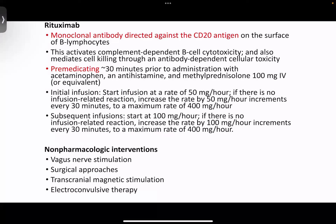In most refractory cases, rituximab is used — a monoclonal antibody directed against CD20 antigens on the surface of B lymphocytes. Before giving rituximab, premedication approximately 30 minutes prior with acetaminophen, antihistamine, and methylprednisolone is required. Initial infusion is at a rate of 50 mg per hour; if there is no infusion-related reaction, it can be gradually increased at 50 mg per hour every 30 minutes to a maximum of 400 mg per hour. In subsequent infusions, we can directly start with 100 mg per hour and again increase at 100 mg per hour every 30 minutes to a maximum of 400 mg per hour.